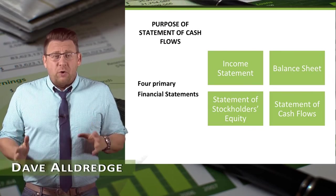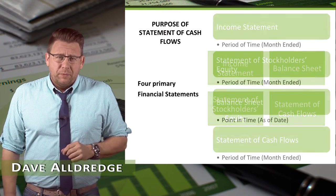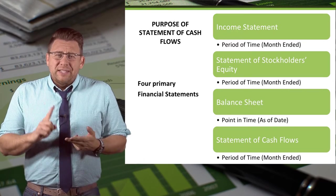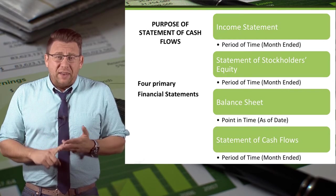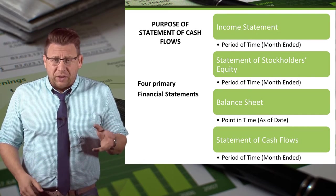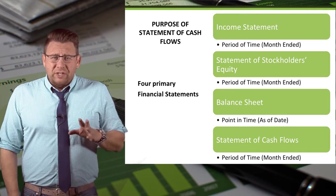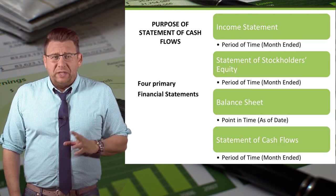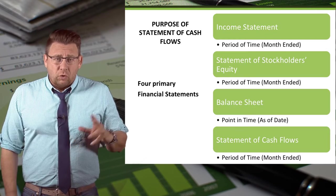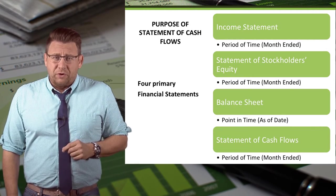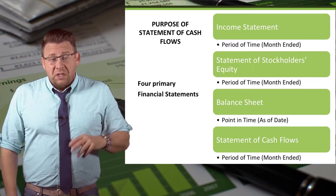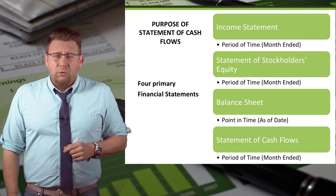The statement of cash flows is one of four primary financial statements. Of the four financial statements, the income statement, statement of stockholders' equity, and the statement of cash flows are prepared for a period of time like a month or a year. For example, these financial statements would be dated for the month ended December 31, 2015 or for the year ended December 31, 2015. That difference would let investors and creditors know if the information was for one month or one year.